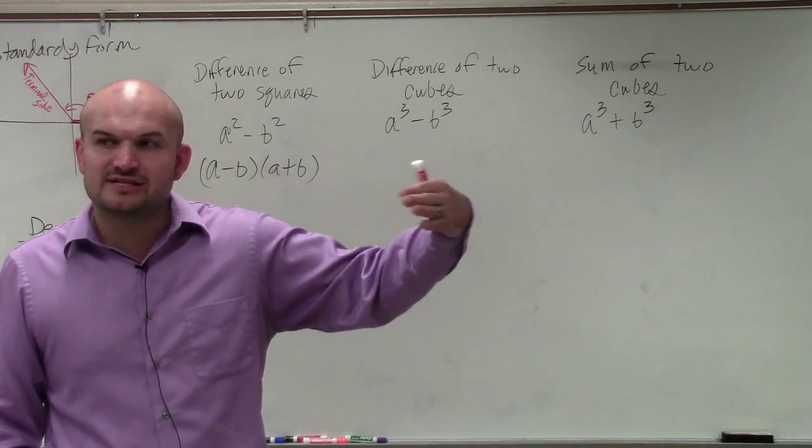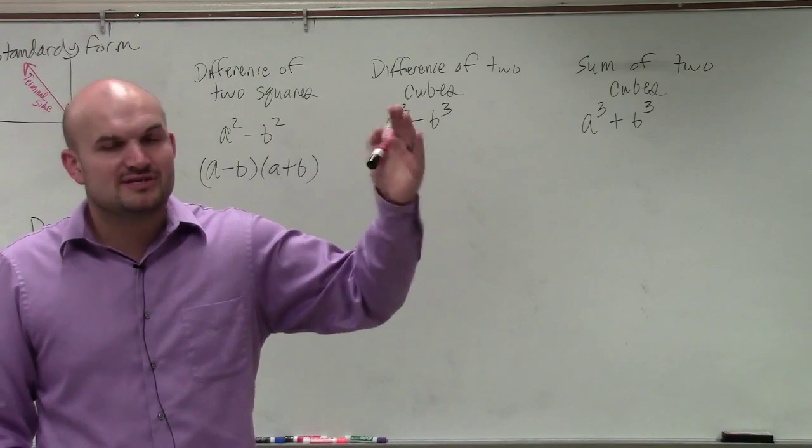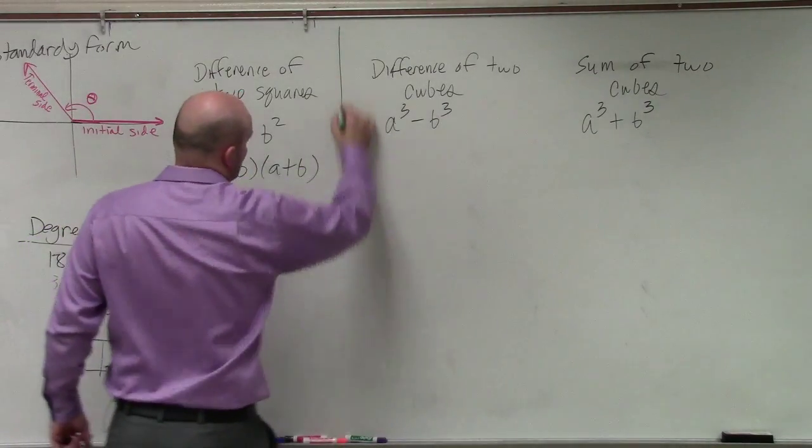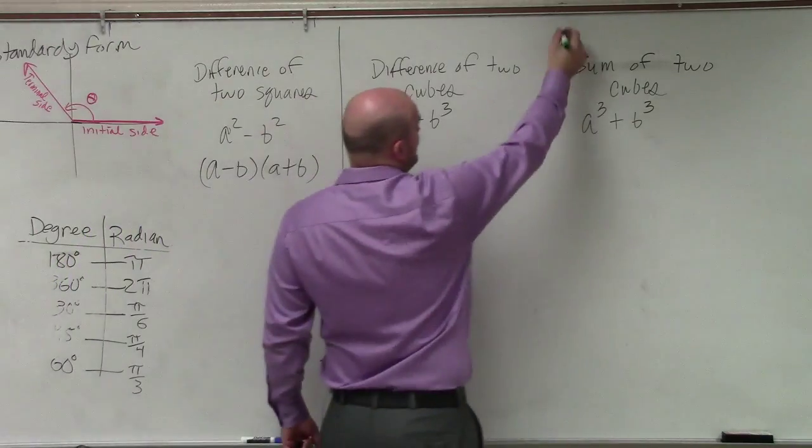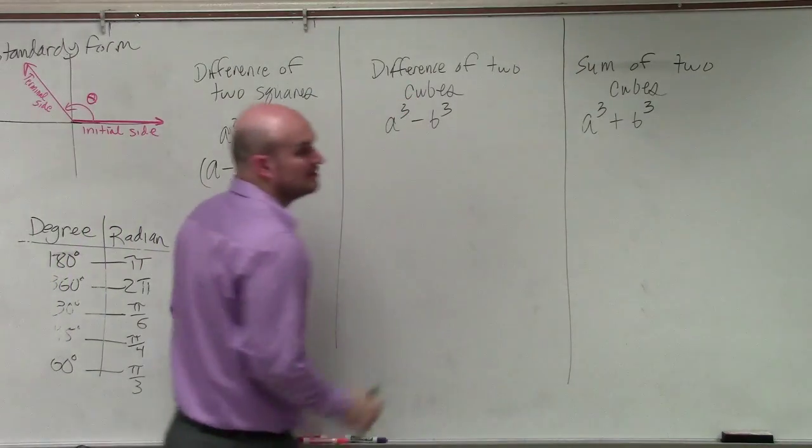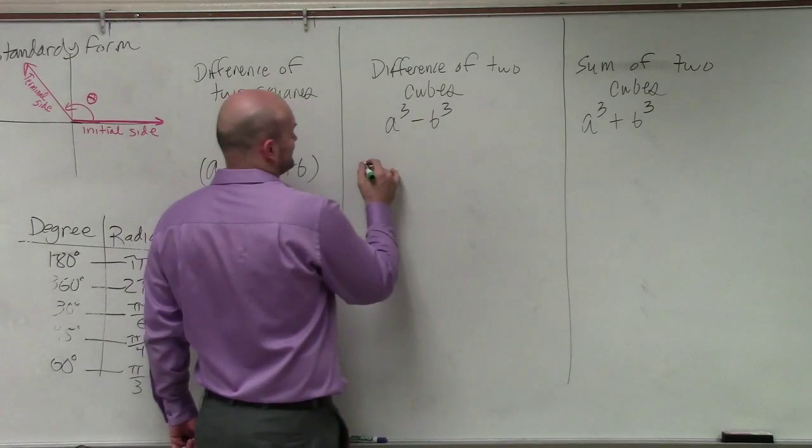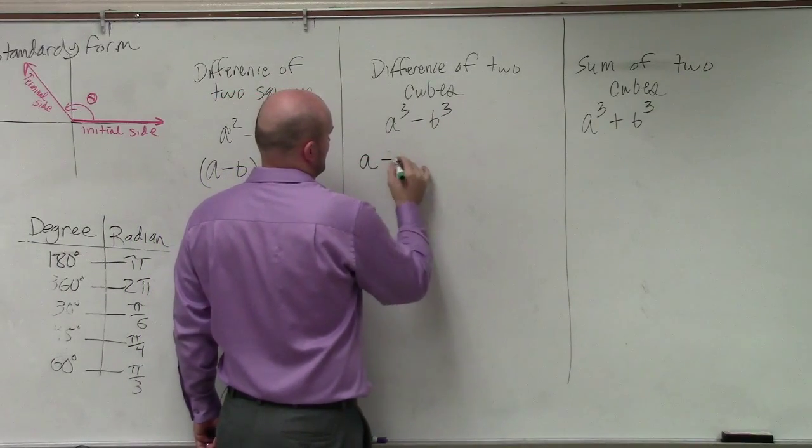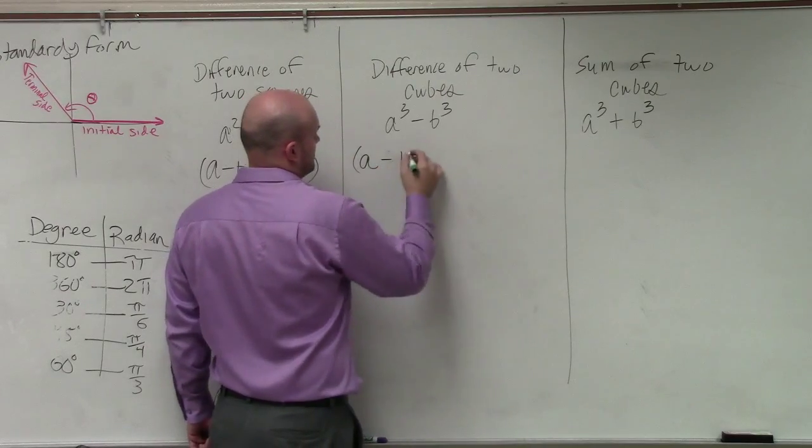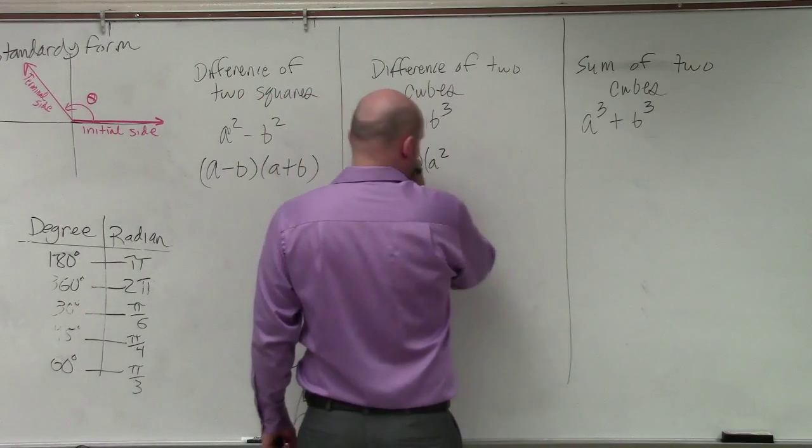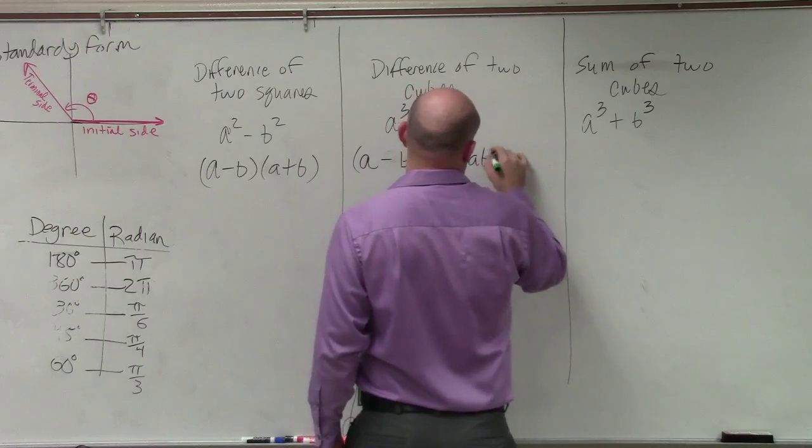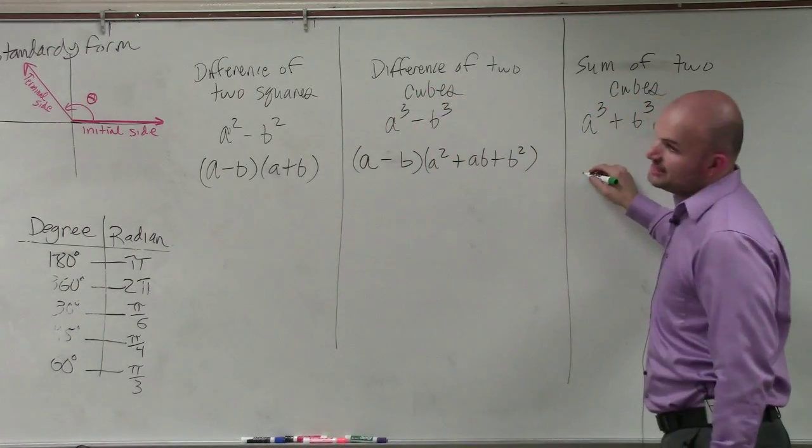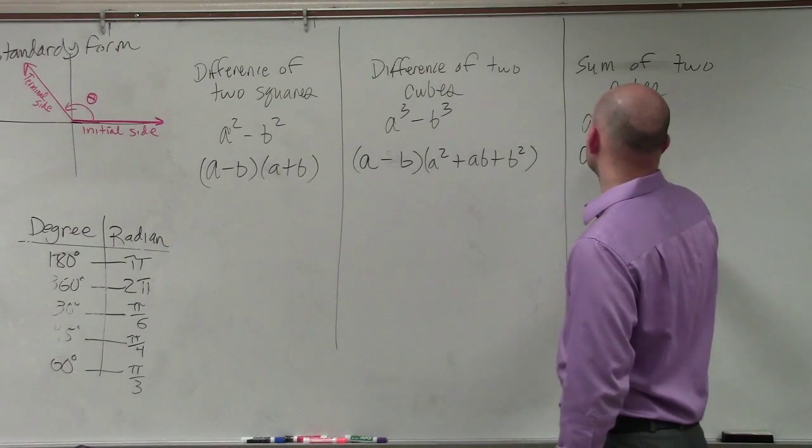Just like factoring for the difference of two squares, there's a nice factored form for the difference of two cubes. And there's a nice factored form for the sum of two cubes. And the factored form goes like this. And the factored form for the sum of two cubes goes like this.